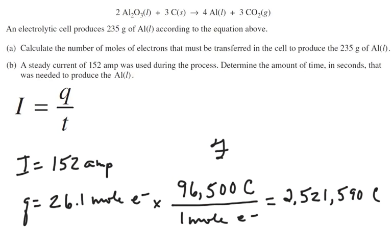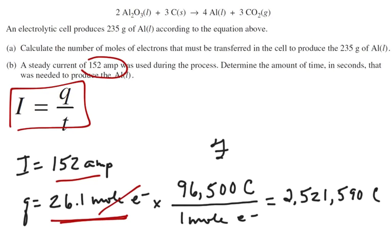Now the second part, we're going to go back and use our I equals q over t formula, and we're saying that I is 152 amps, and that's given in the problem. But for q, now q is the charge, we know that there are 26.1 moles of electrons, and we use the Faraday constant to change moles of electrons into coulombs. And when you multiply those two values, we get a huge number, 2,521,590 coulombs.